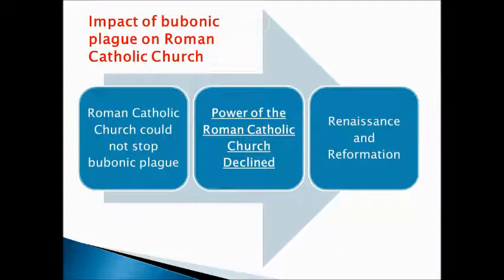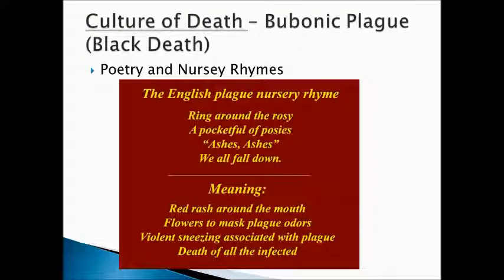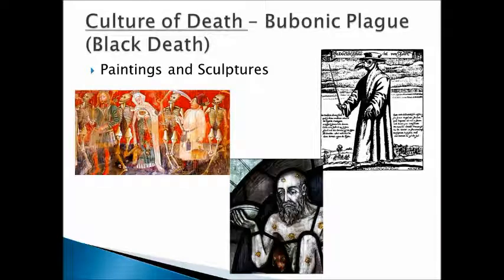The bubonic plague also affected the Roman Catholic Church. The Church couldn't stop the plague — they thought it was because people were consorting with the devil. Since the Church couldn't stop it, its power declined, and eventually we get the Renaissance and Reformation. We also see a culture of death during the Middle Ages — poetry and nursery rhymes like 'Ring around the rosy, pocket full of posies, ashes ashes, we all fall down' come from this time period. Paintings, stained glass, and sculptures about the Black Death reflect a culture surrounded by death — people wrote about it, drew about it, and painted about it.